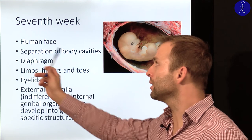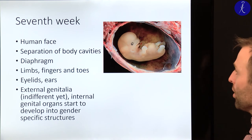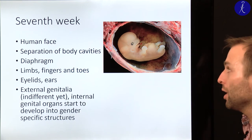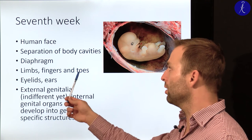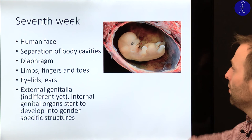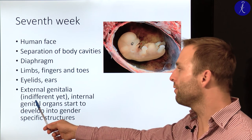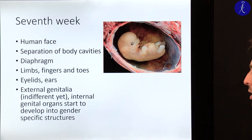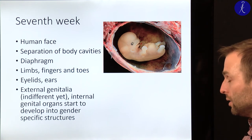During the seventh week, the face is almost human-like — eyes, ears, nose and mouth are already visible. The body cavities are separated by development of the diaphragm: the pleural cavity, pericardial cavity and abdominal cavity are now separated. Limbs, fingers and toes are more or less finished and recognizable. Eyelids and ears start to appear. Development of the external genital organs also starts — male and female look the same at this stage — but internal genital organs start to develop into gender-specific structures, with the genital ridge developing into testis or ovary by the seventh week.